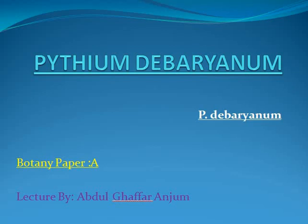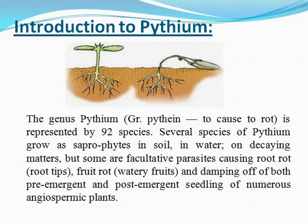Kingdom Fungi, Division Eumycota, Subdivision Mastigomycota, Class Oomycetes. The genus Pythium, which causes rot, is represented by 92 species.